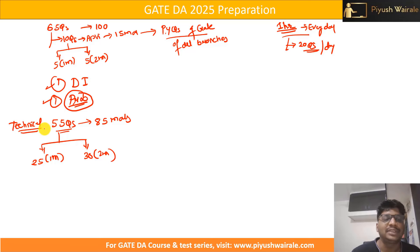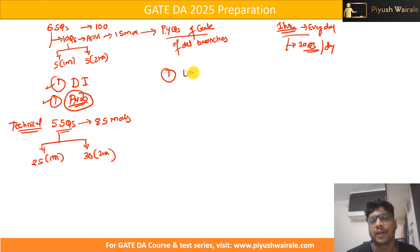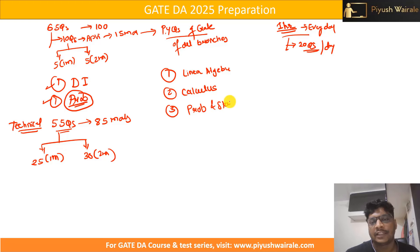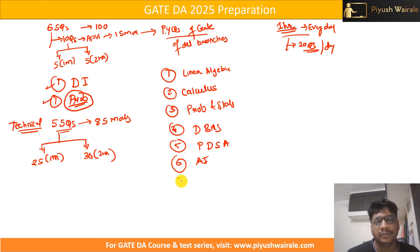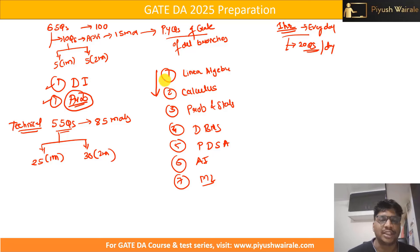We have seven subjects in the technical part: first is linear algebra, second is calculus, third is probability and statistics, fourth is DBMS, fifth is PDSA (Programming Data Structures and Algorithms using Python), and sixth is AI and ML. Remember this sequence — in this order only you need to start your preparation.